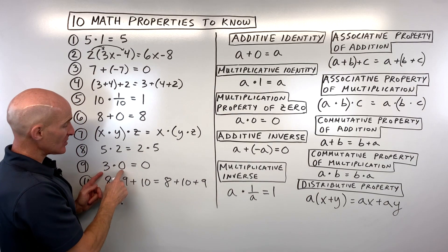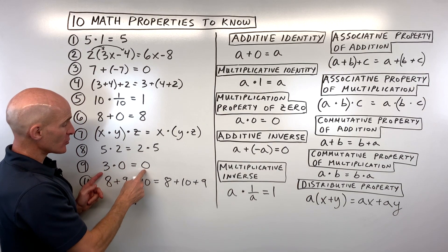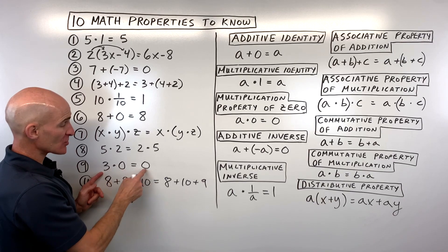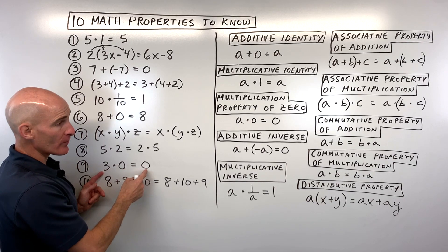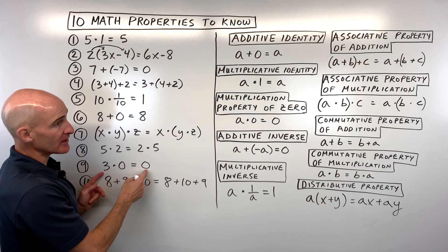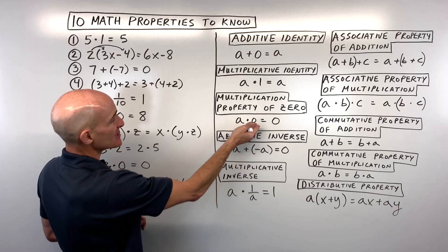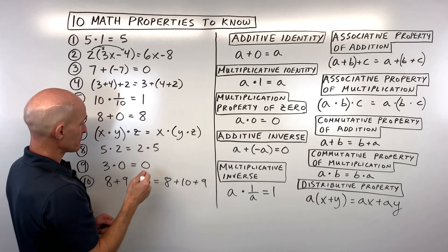Number nine: three times zero equals zero. Whenever we multiply anything by zero, we get zero — that's the multiplication property of zero.